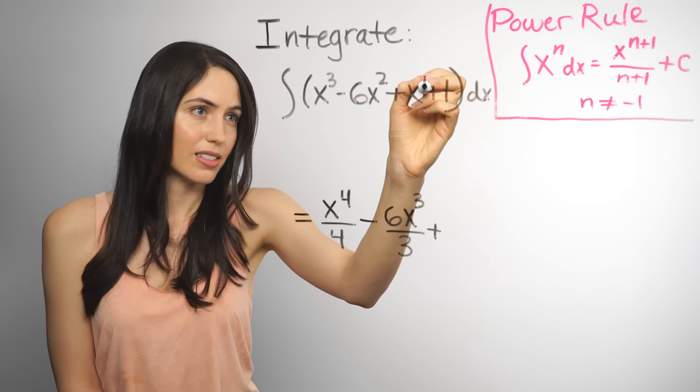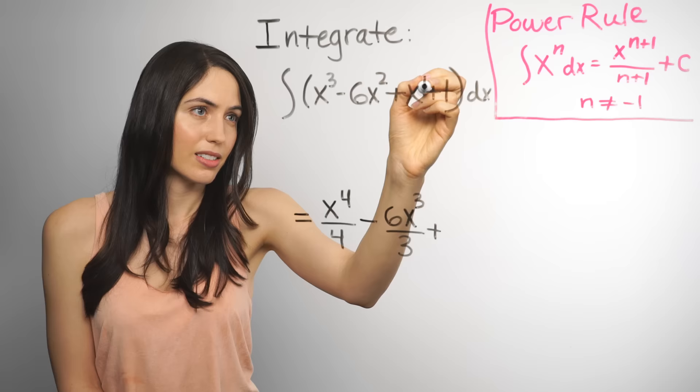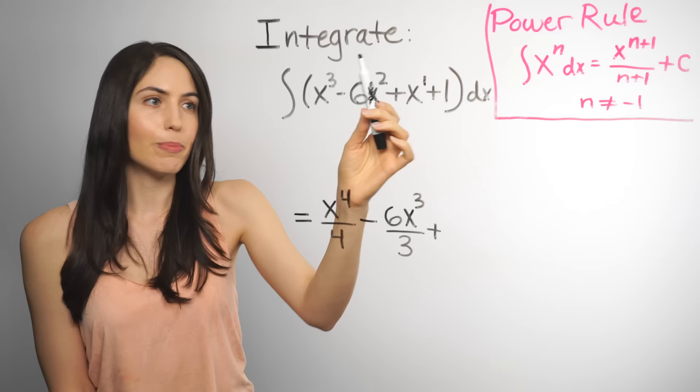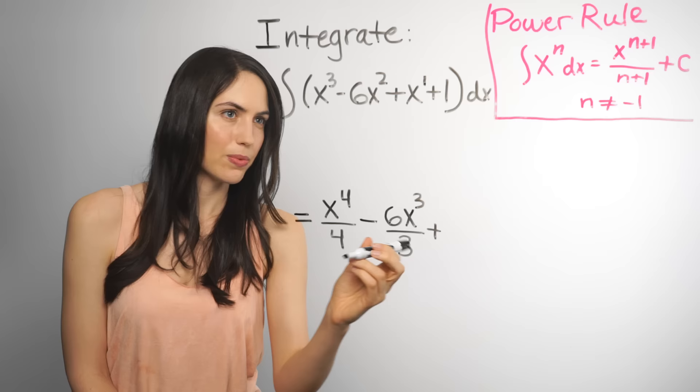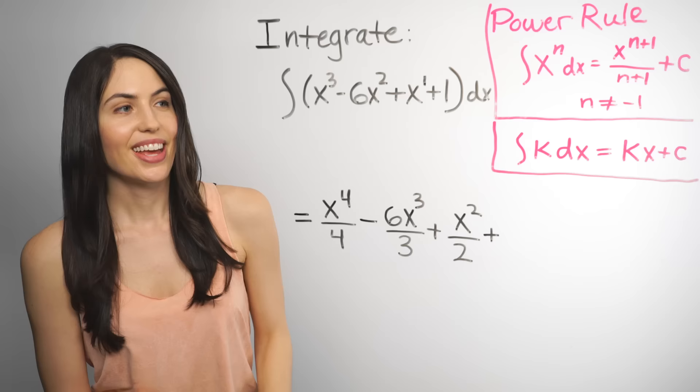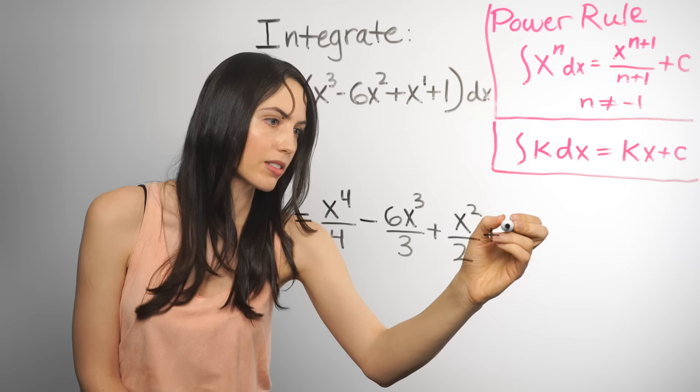And we'll clean that up later. We can also keep the addition because of the sum and difference rules. What about x? Well, that is a power of x. There is this implied 1 or understood power of 1. So if we use the power rule on x to the first power, it becomes x squared over 2. And any time you have just a constant term, the integral of that will just be the number times x. So the integral of 1 is 1 times x, or just x.